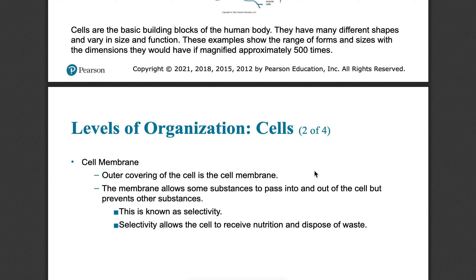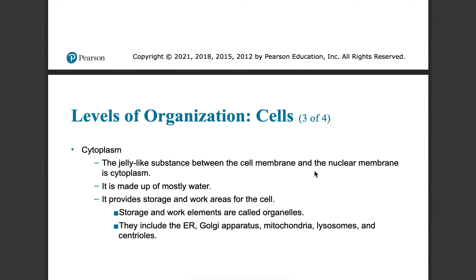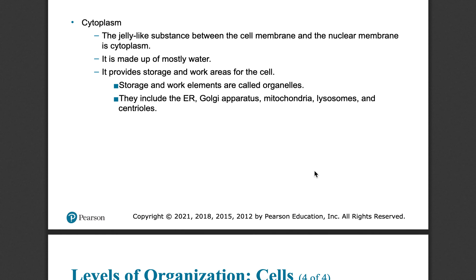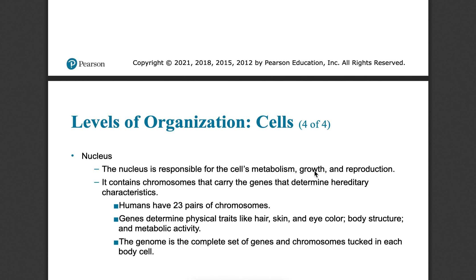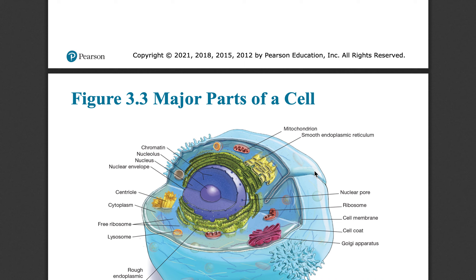Cells have a cell membrane that contains everything in them. They have cytoplasm, which contains all the different structures inside. Inside each cell there is a nucleus — the brain of the operation — which contains our DNA. They have major parts that do different things like providing energy or giving structure, depending on the cell.